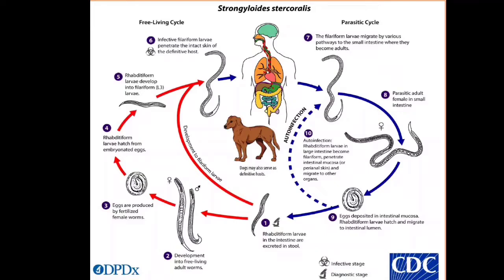The parasitic cycle begins when filariform larvae penetrate the epidermis of a human host. This second generation of filariform larvae is unable to mature into free-living adults and must seek a new host in order to continue the life cycle. When human skin comes into contact with polluted soil, filariform larvae enter and travel to the small intestine.